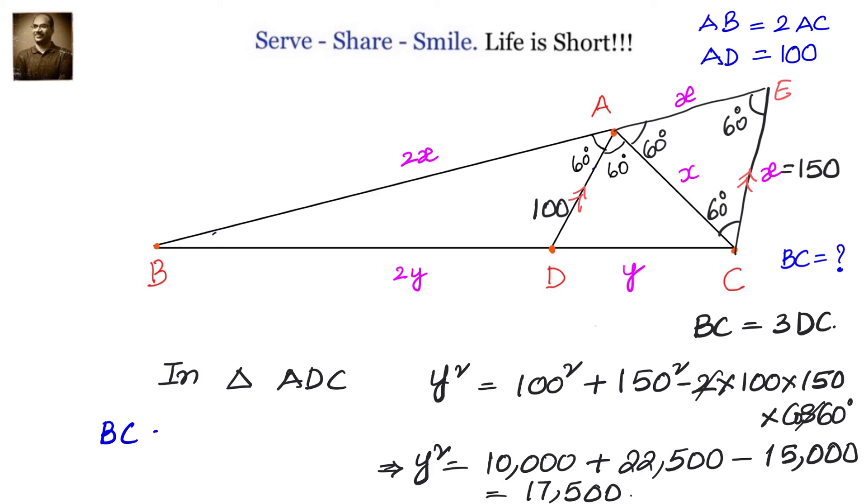So BC is equals to 3 times CD or DC which is equals to 3 times square root of 17500.